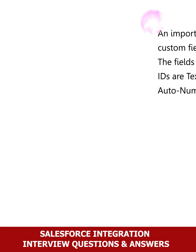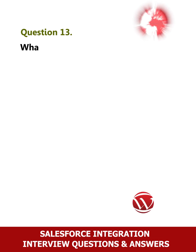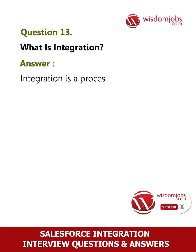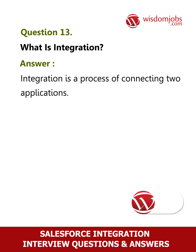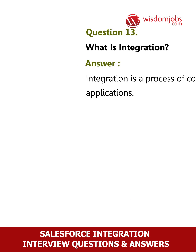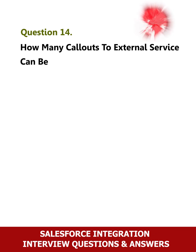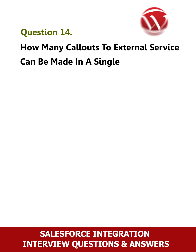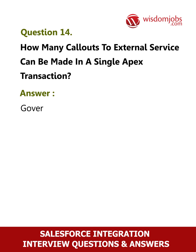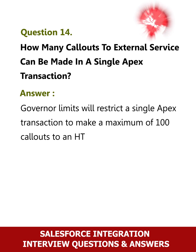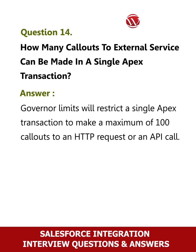Question 13: What is integration? Answer: Integration is a process of connecting two applications. Question 14: How many callouts to an external service can be made in a single Apex transaction? Answer: Governor limits will restrict a single Apex transaction to a maximum of 100 callouts to an HTTP request or an API call.